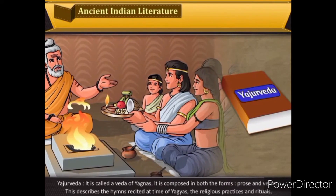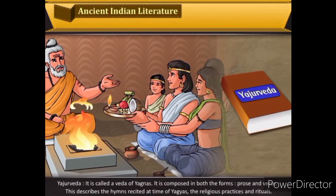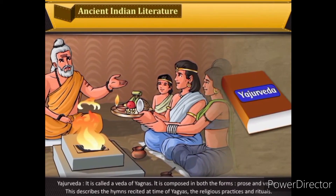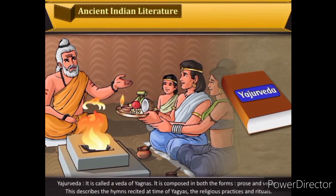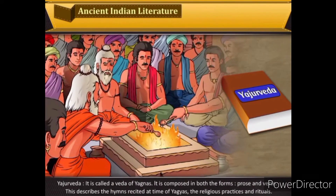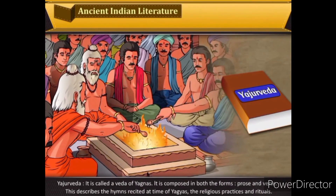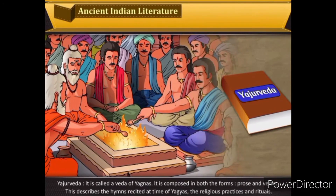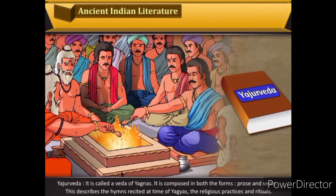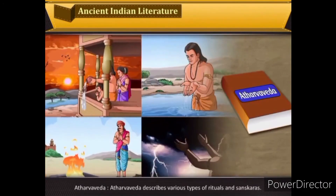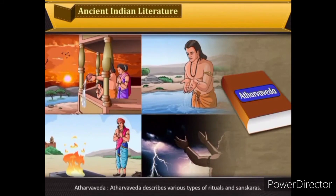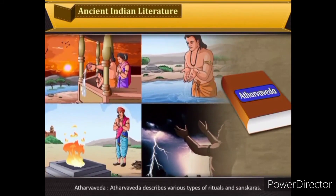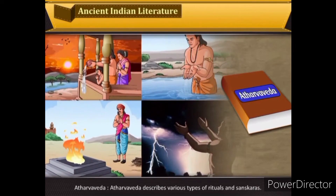The Yajur Veda is called the Veda of yajnas. It is composed in both prose and verse forms, and describes the hymns recited at the time of yajnas, along with religious practices and rituals. The Atharva Veda describes various types of rituals and sanskaras.